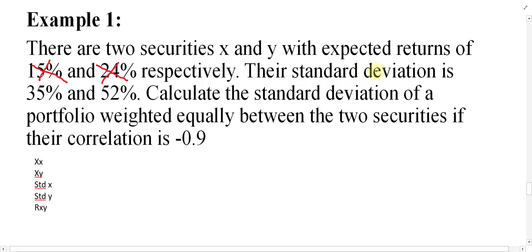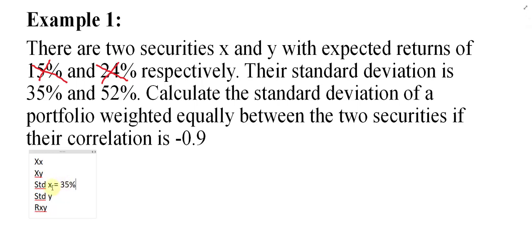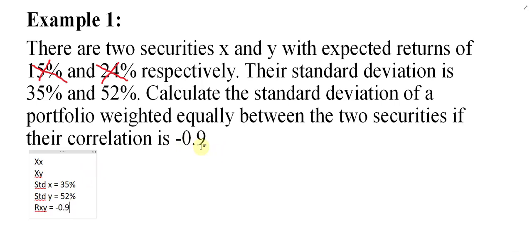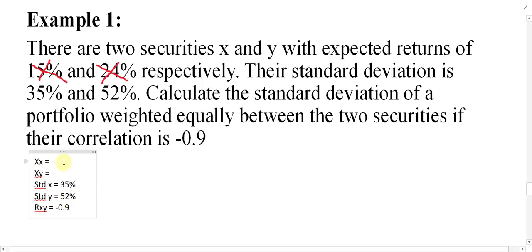Our required information is: standard deviation of X equals 35%, standard deviation of Y equals 52%, and the coefficient of correlation equals minus 0.9. The weights are not stated directly, but indirectly — the question says 'calculate the standard deviation of a portfolio weighted equally between two securities.'